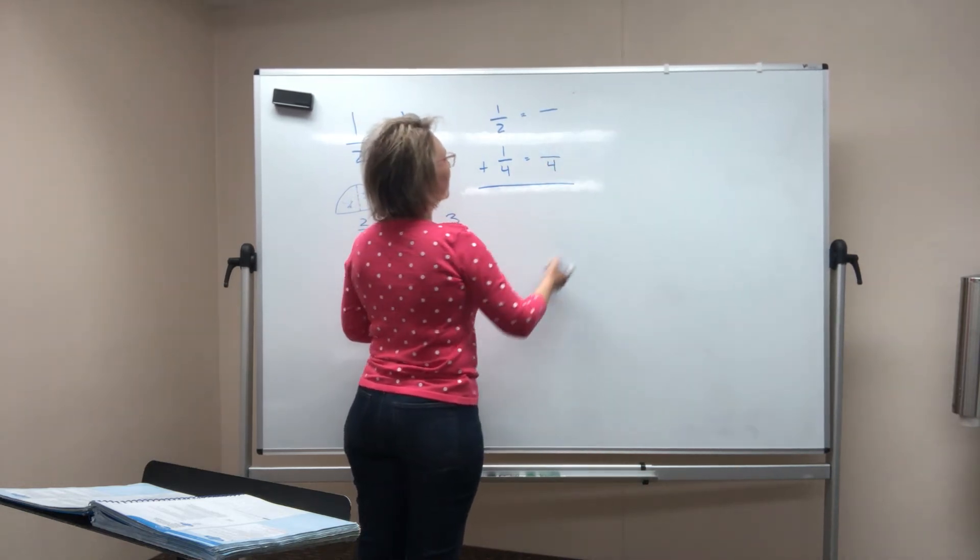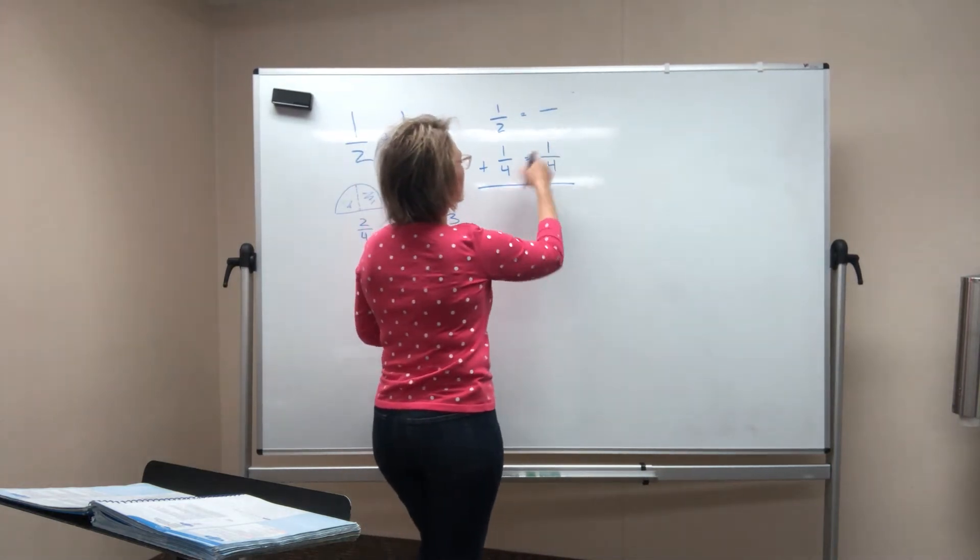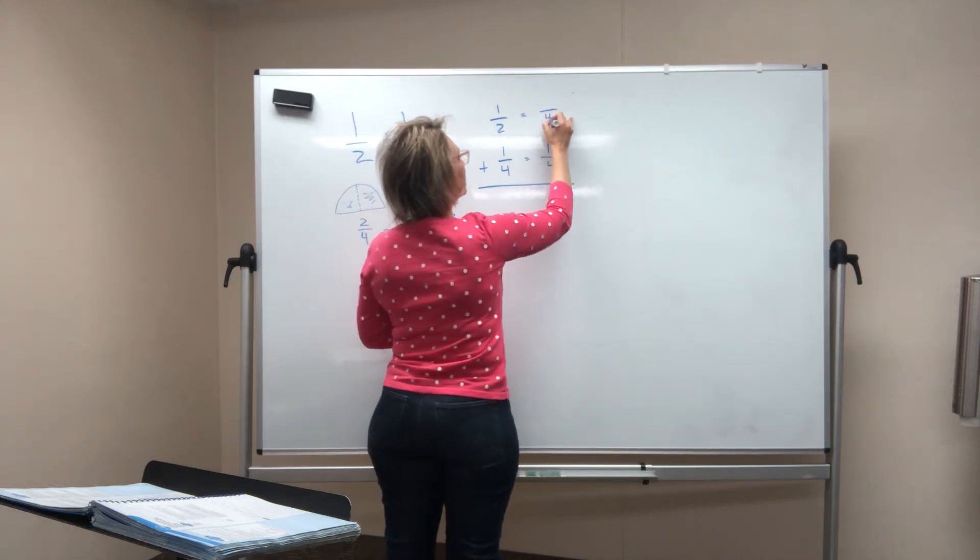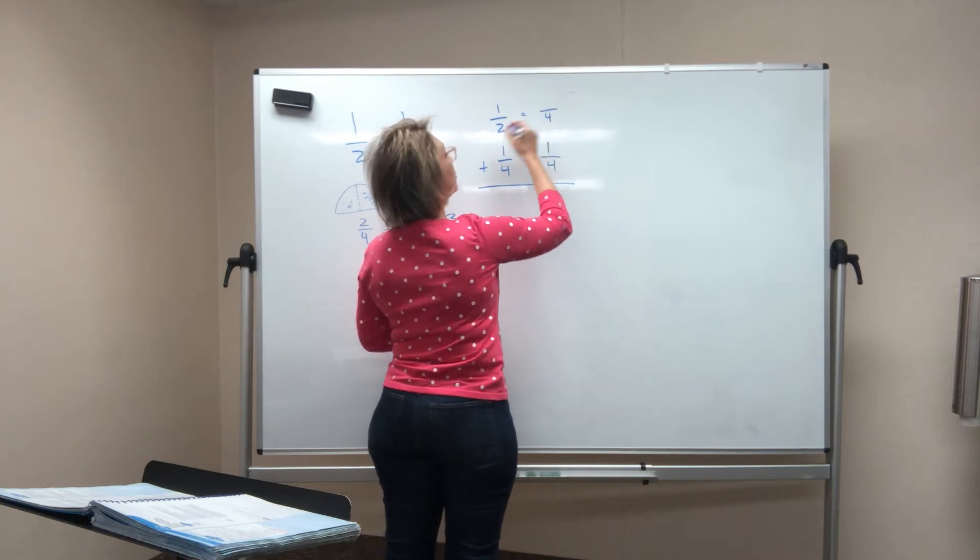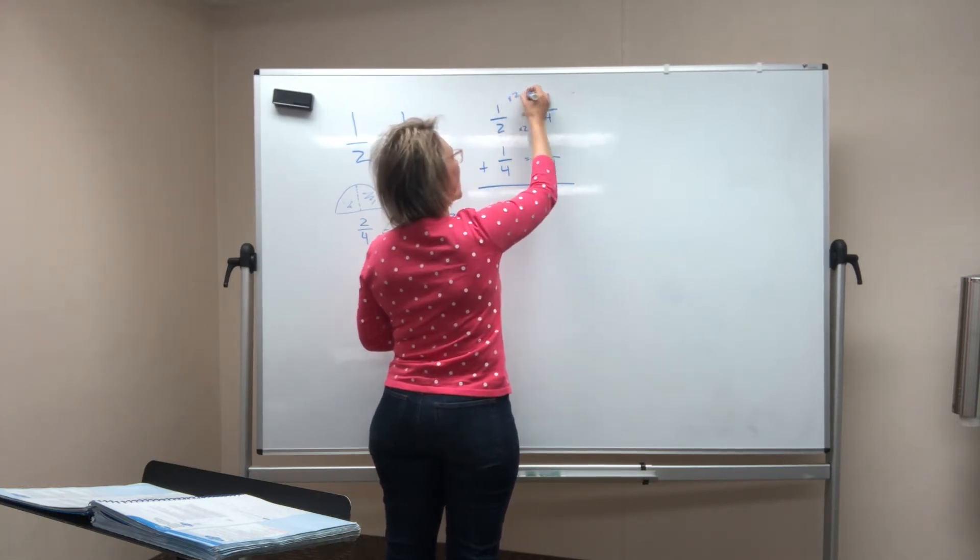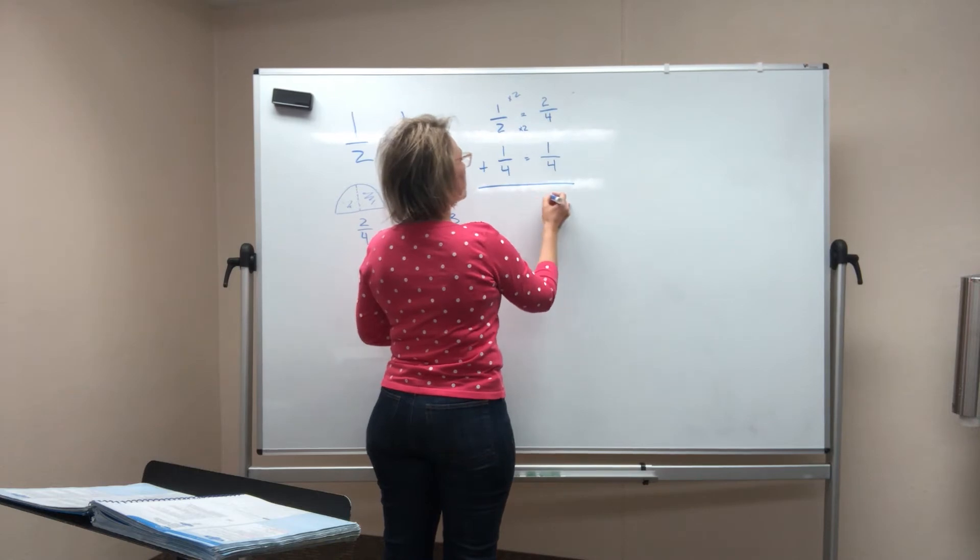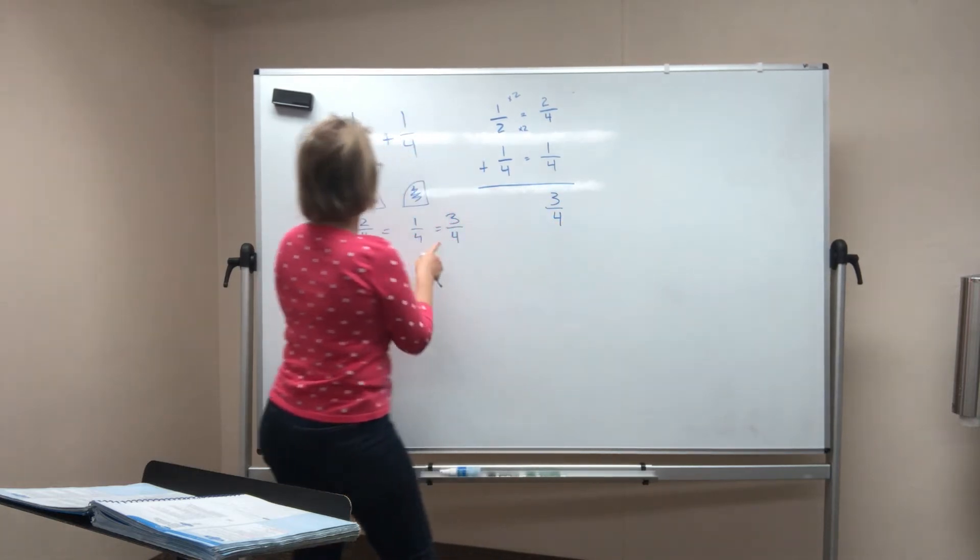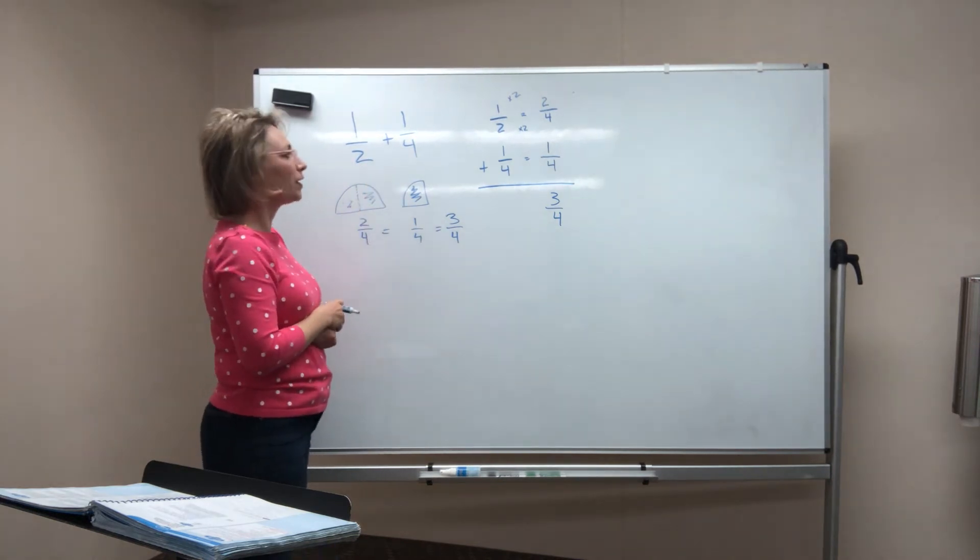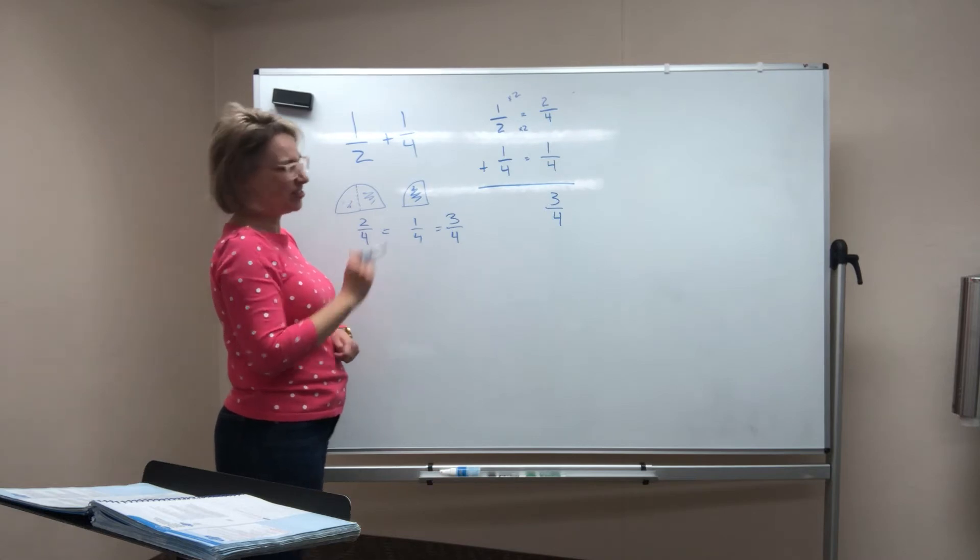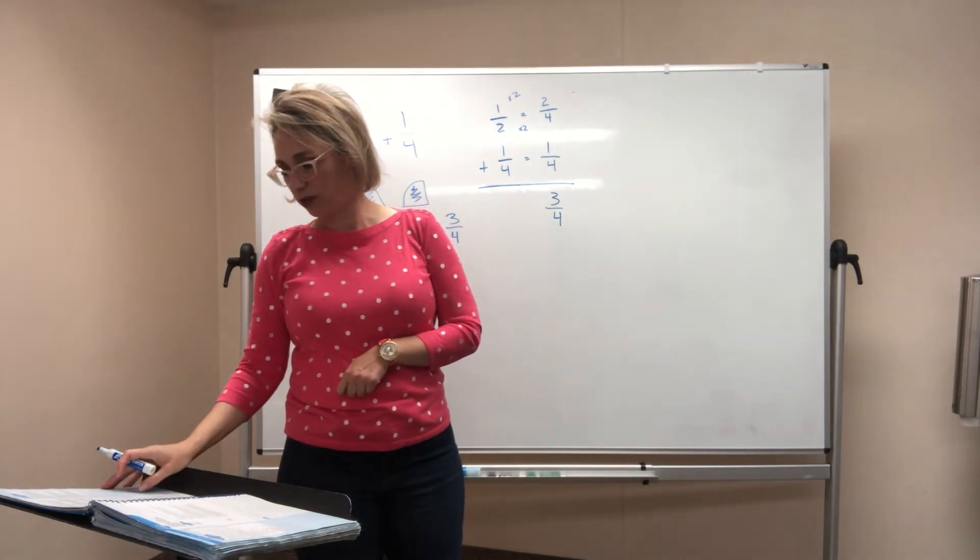So this one's going to stay one fourth. I need to get this one to have that fourth on the bottom. What times two is four? It's times two. Two times two is four. What I do to the bottom, I have to do to the top. One times two is two. So two fourths plus one fourth equals three fourths. Do you see how I got the same answer I did when I drew the picture here? That's the way that you do it when you don't want to draw a picture, which we usually don't. If you're confused, draw the picture. But you need to know how to do this without having to draw a picture.